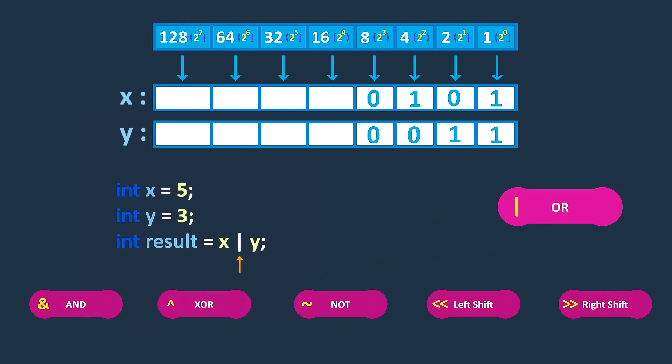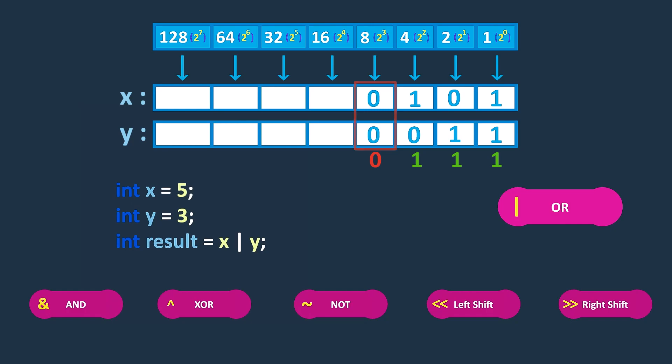The OR operator performs a logical OR operation between the corresponding bits of two operands. It returns a value where each bit is set to 1 if at least one of the corresponding bits in the operands is 1, otherwise the bit is set to 0. In this example, the binary representation of the result is 1110, because the first, second, and third bits have at least one 1 among x and y. Only the last bit in x and y is 0, so it remains 0. Therefore, the decimal value of the result is 7.